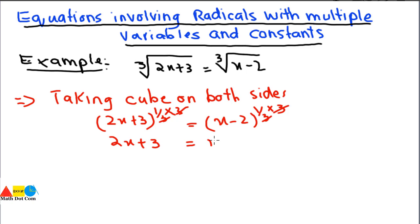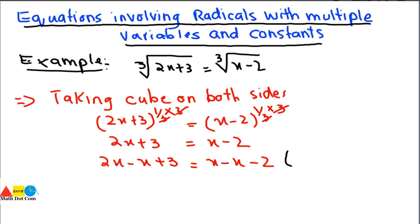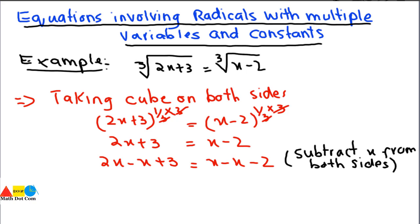Now it can be easily solved. We subtract x from both sides: 2x - x + 3 = x - x - 2. According to the rules of math, if you subtract on one side, you must subtract from the other side as well.